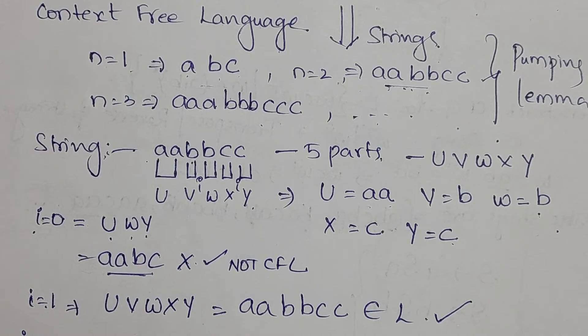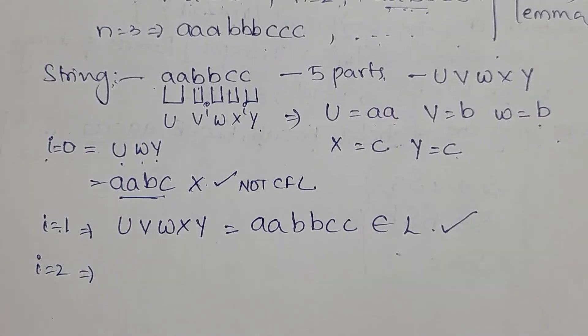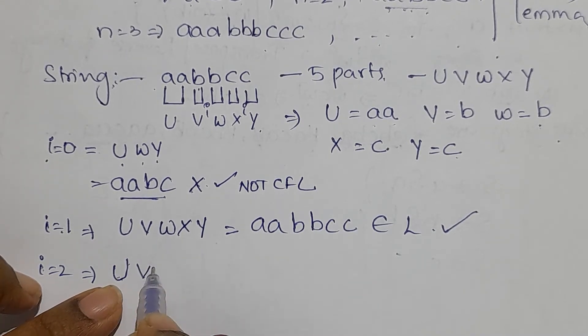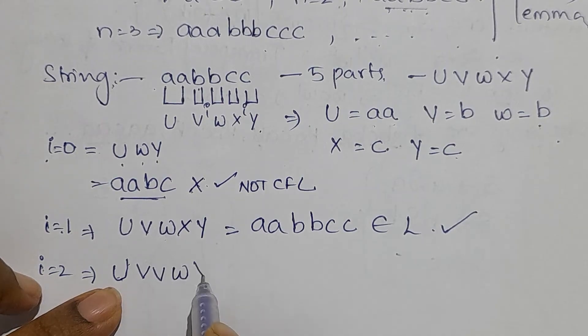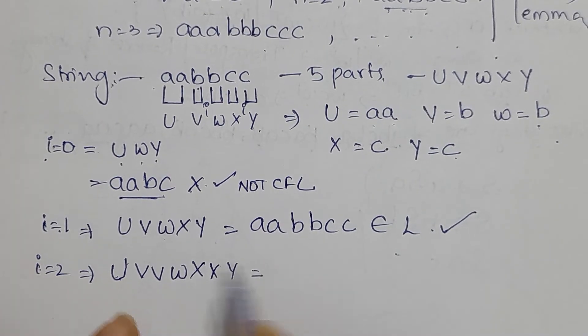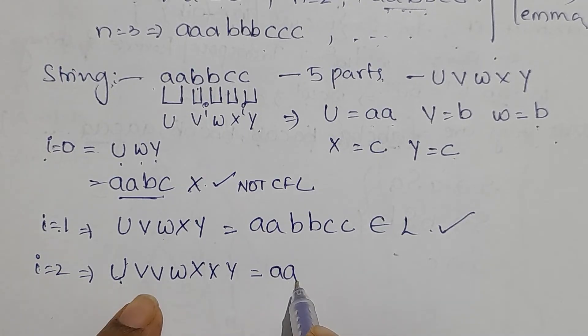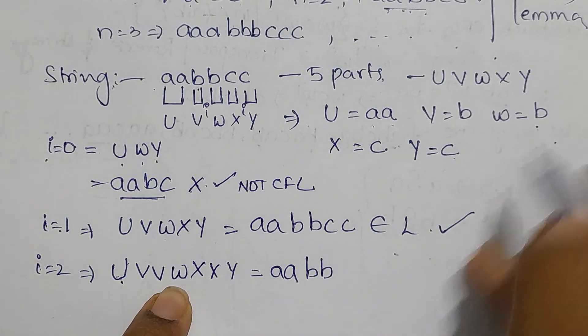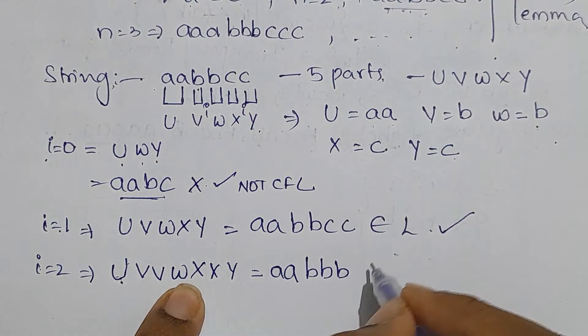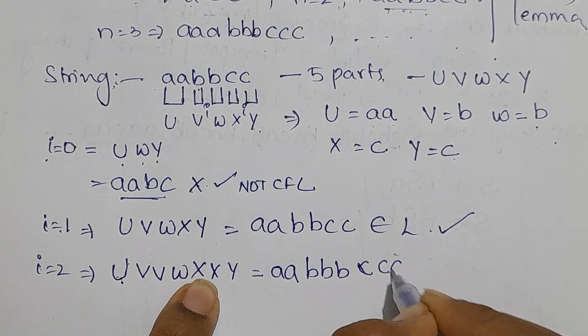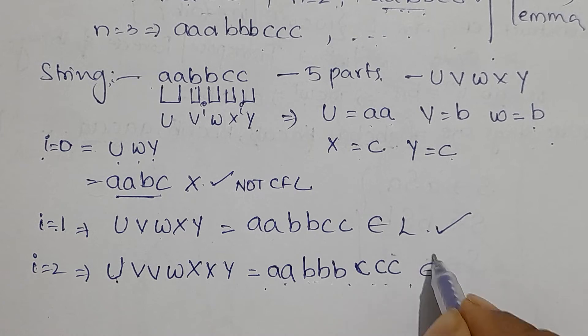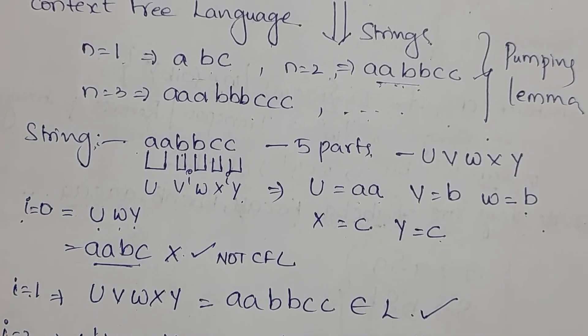If i=2, we have u vv w xx y = aa bb b cc c = aabbbccc. Observe carefully: 2 a's followed by 3 b's followed by 3 c's. This also violates the rule of the given language.